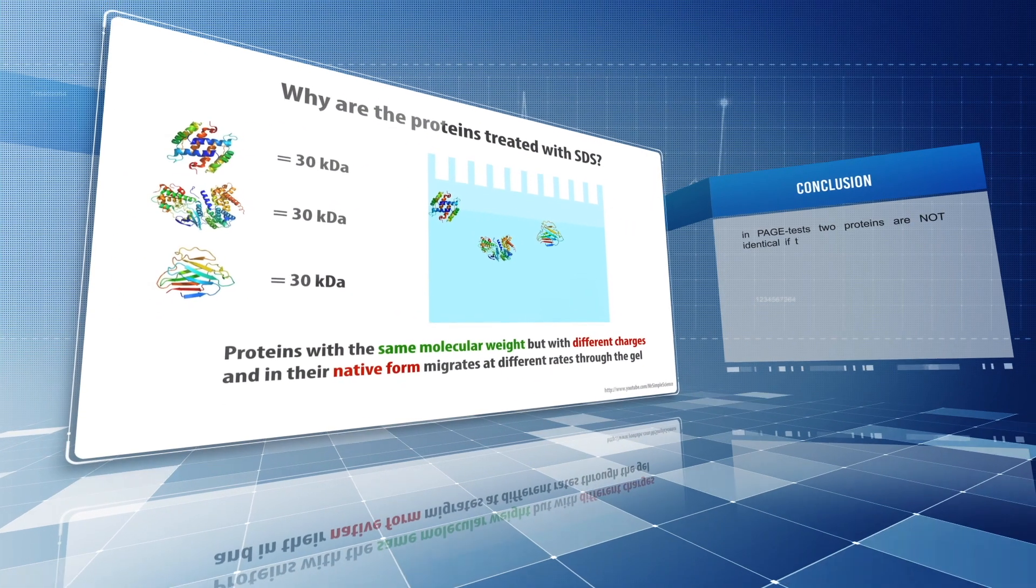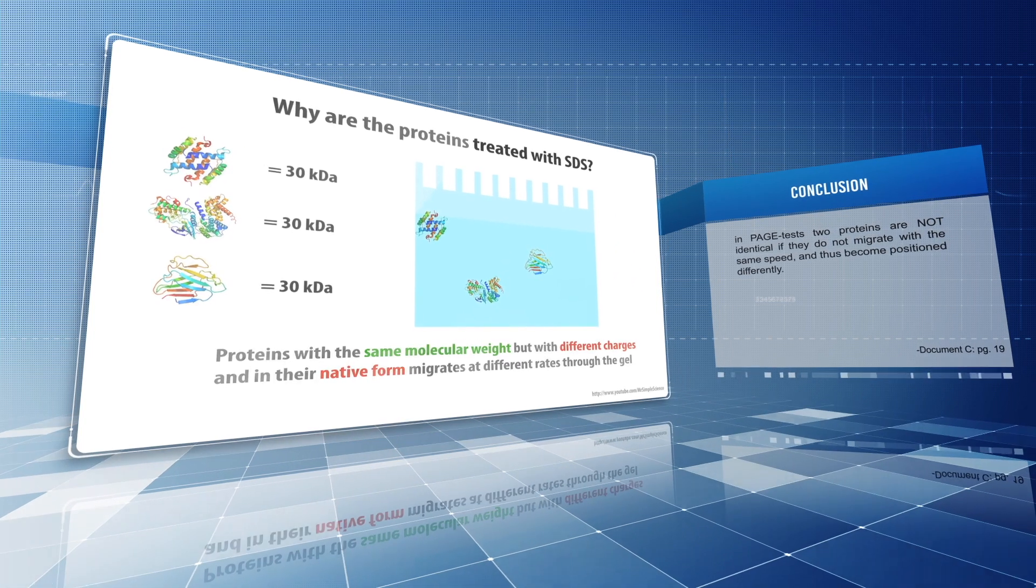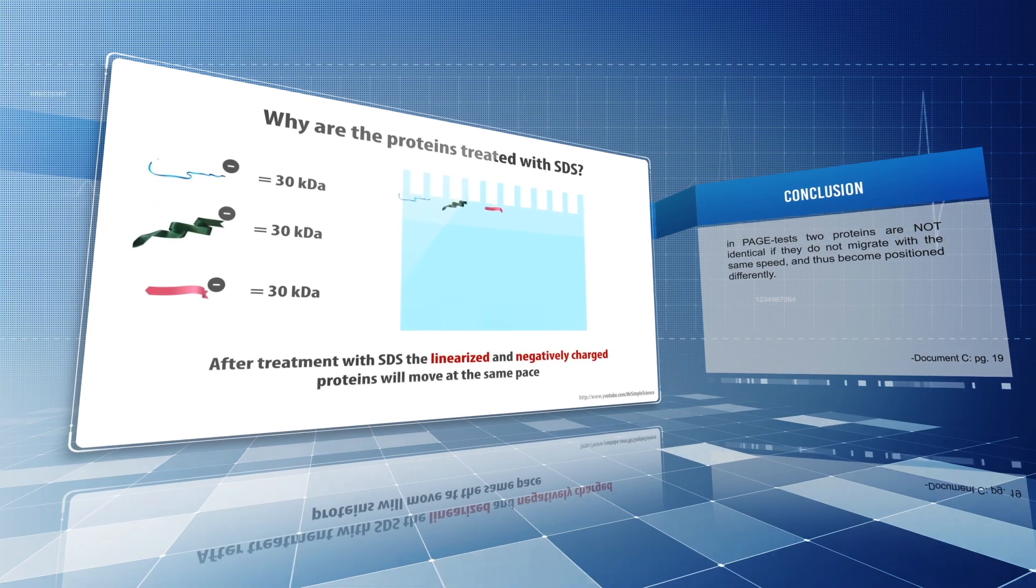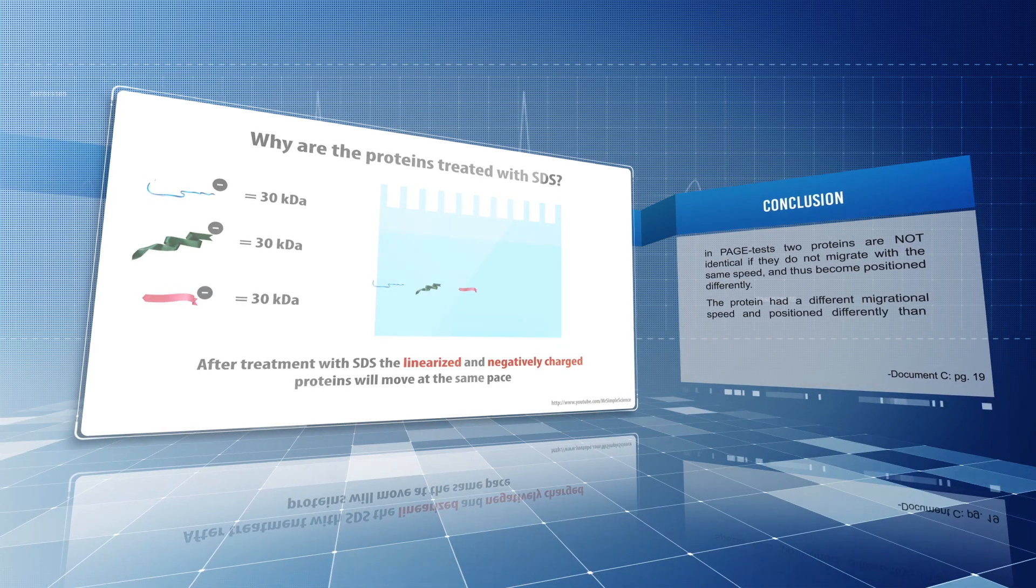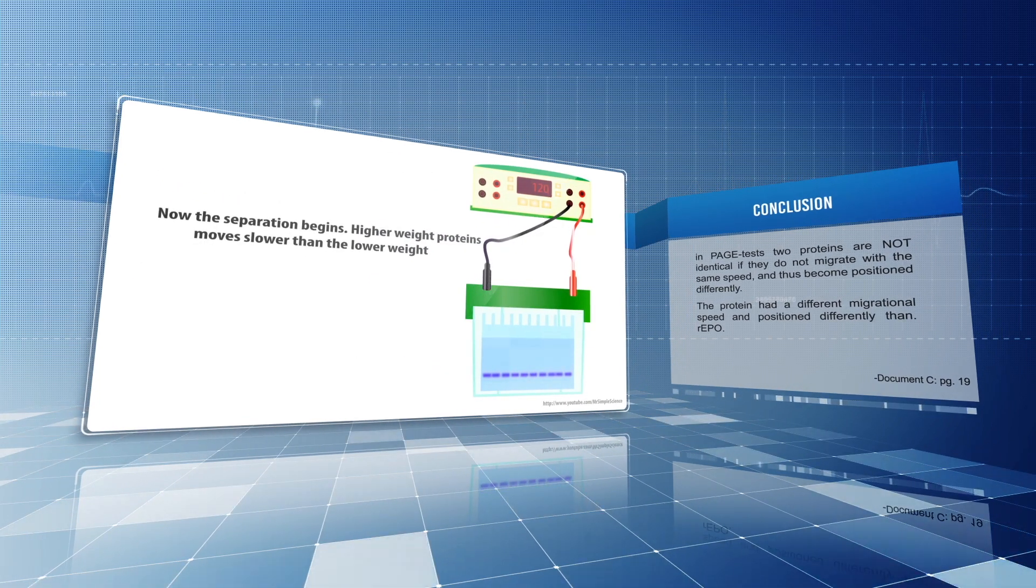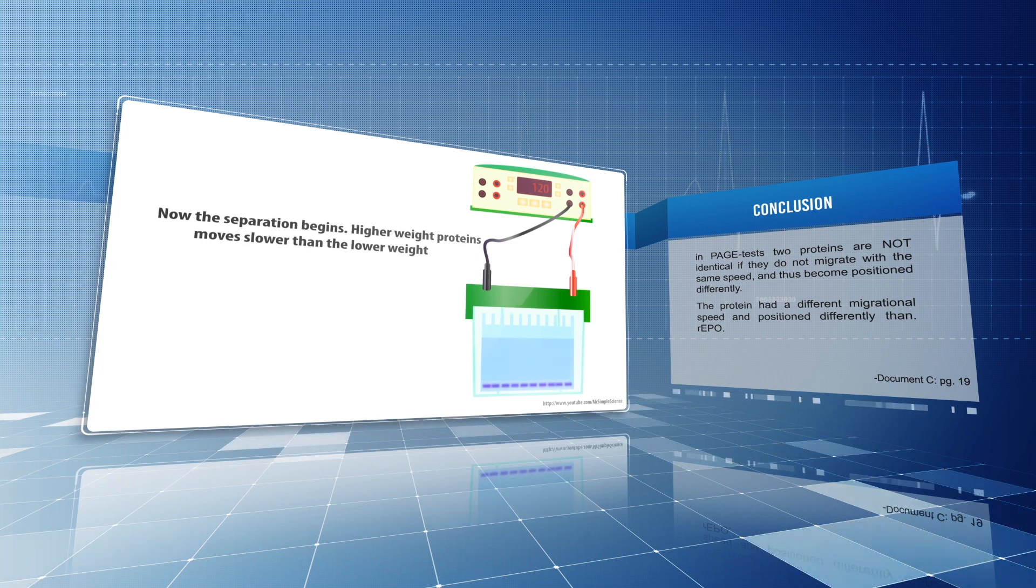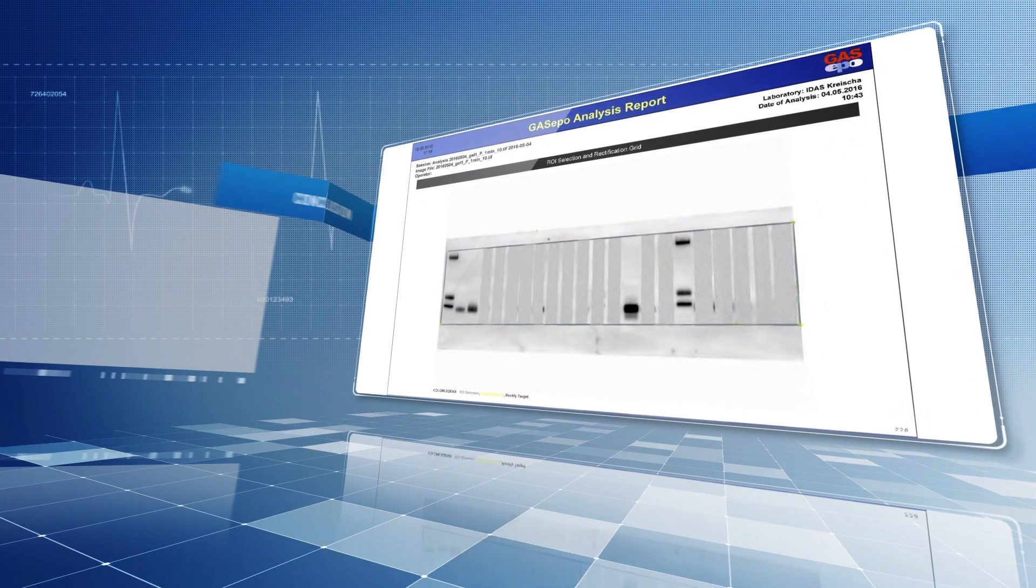Two proteins are not identical if they do not migrate with the same speed and thus positioned differently. The protein that the laboratory claims is R-EPO has not been positively identified. That is possibly due to the tailing or spreading of natural E-EPO, which is typical and can be seen from other negative controls.